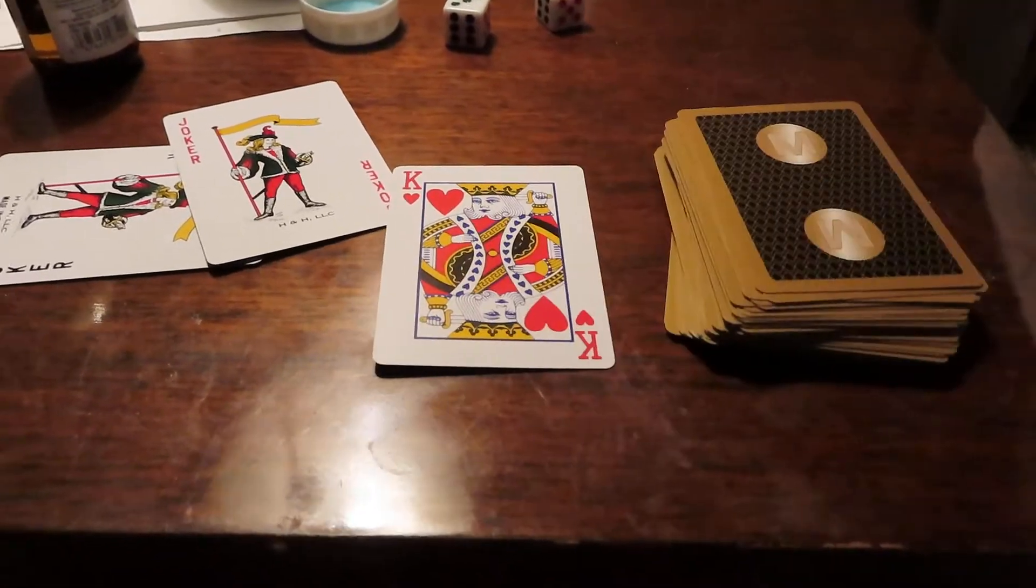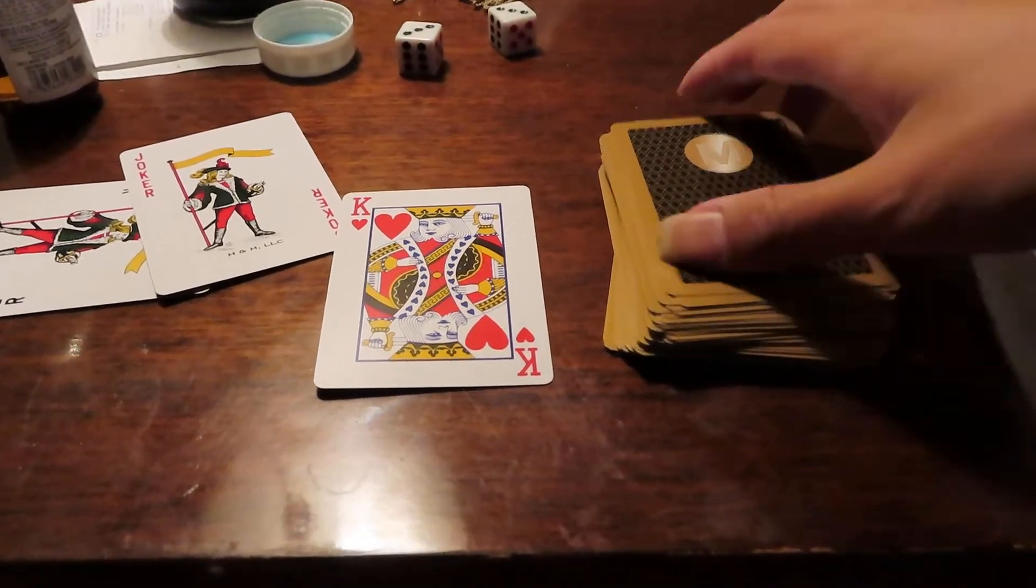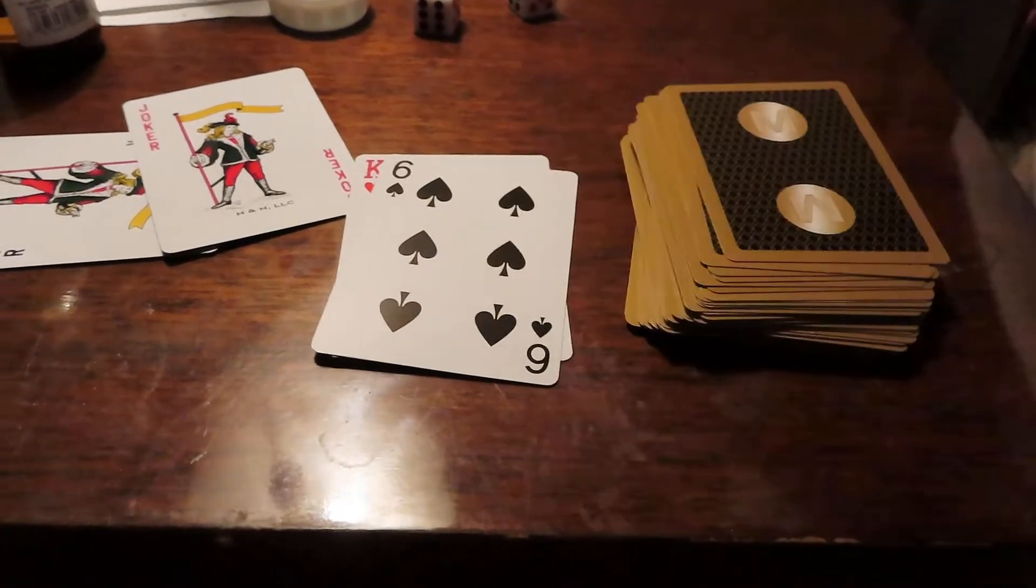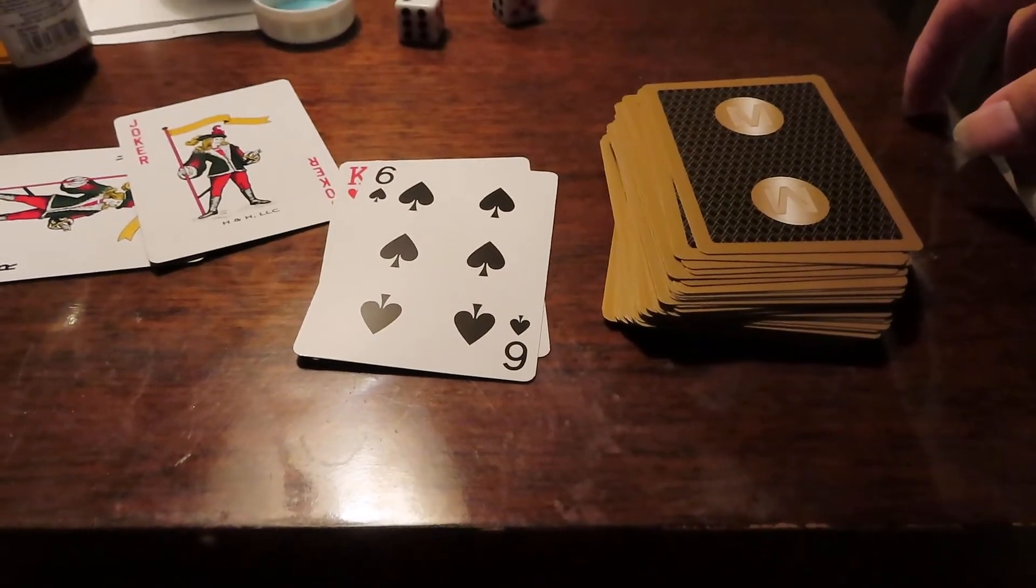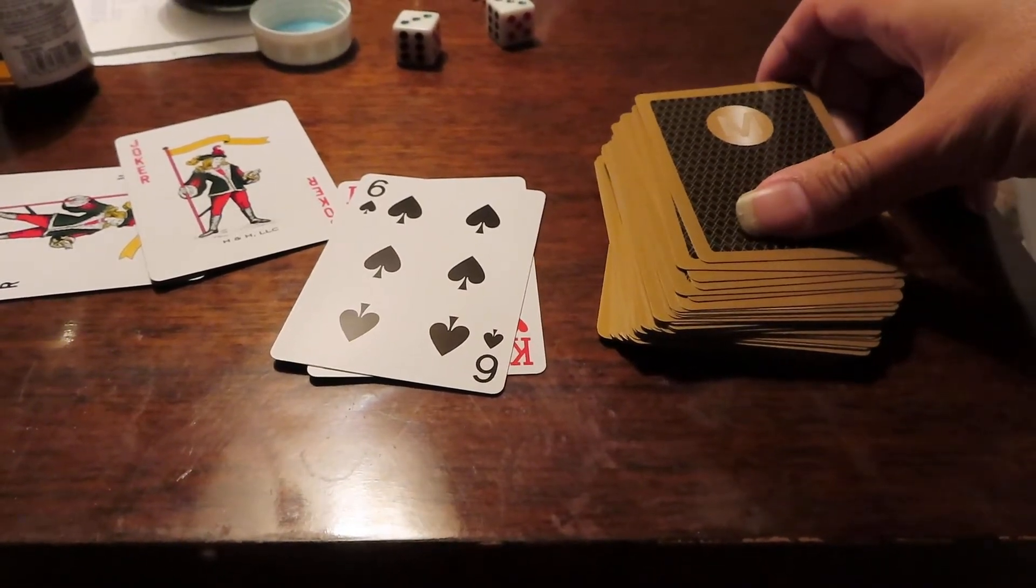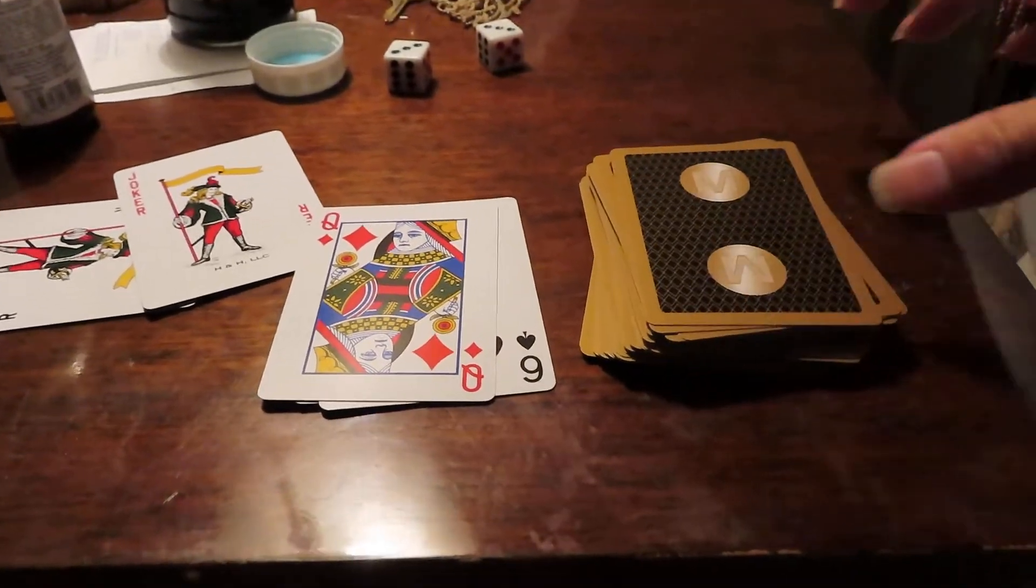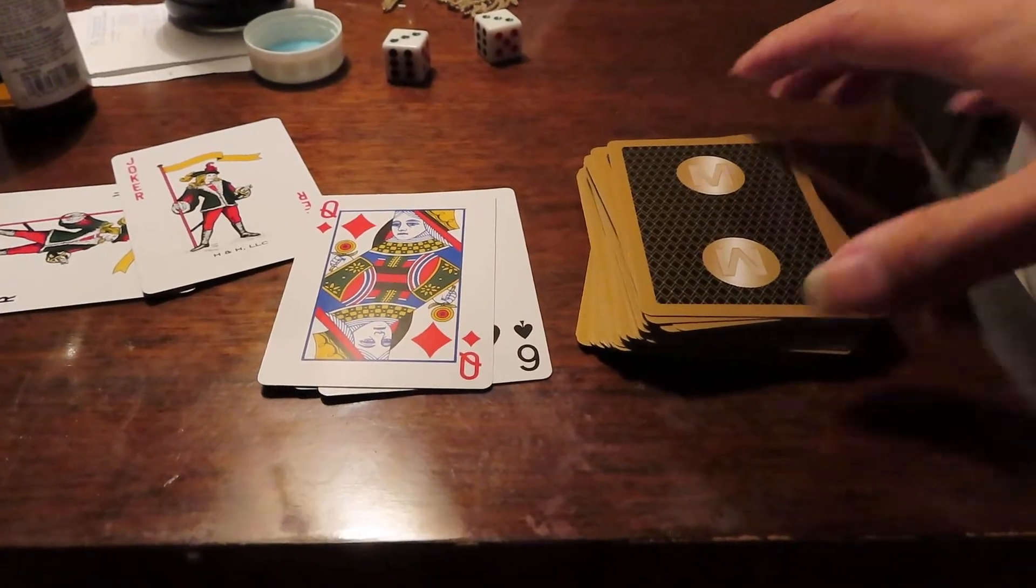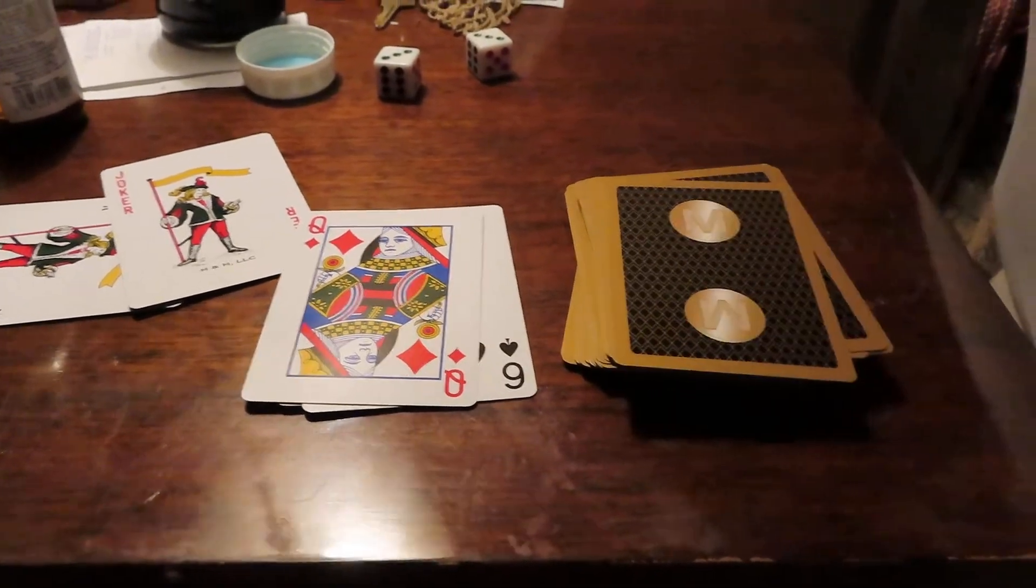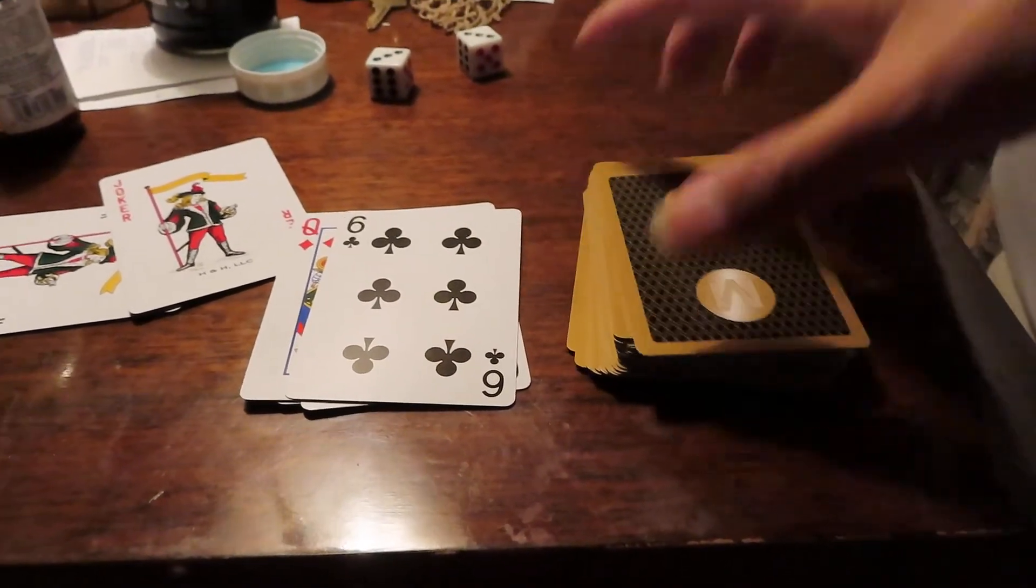And hopefully we can remember that the king of hearts has come up so we don't guess it again. And let's guess the ten of clubs. Okay, and hopefully we remember that the king of hearts and the six of spades has come up. And we guessed the four of diamonds. Okay, and the queen of diamonds has come up. So now we got three cards we got to remember. We're going to guess the nine of clubs. That was the six of clubs. See, I can't remember those four cards already.